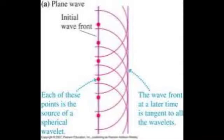All the points on the wavefront of a plane can be treated as point sources. A few of these points are shown in the initial wavefront in the picture. Each of these point sources produces a circular or spherical secondary wave, or wavelet. The line tangent to each of these wavelets at some later time determines the new position of the initial wavefront. This approach to analyzing waves is called Huygens' Principle, named after the physicist Christiaan Huygens, who developed it.